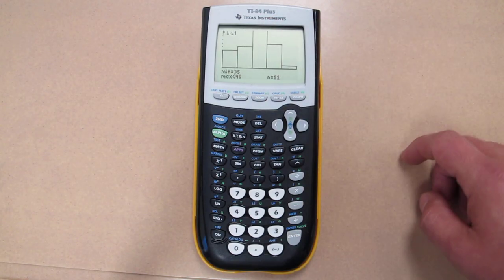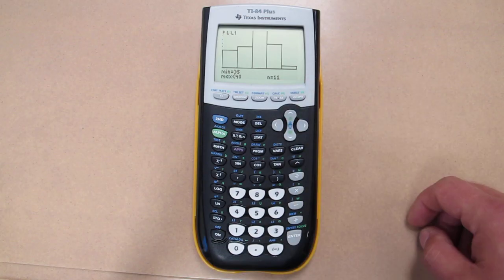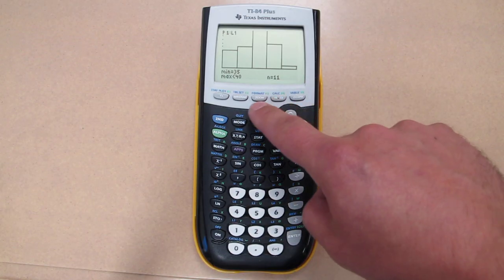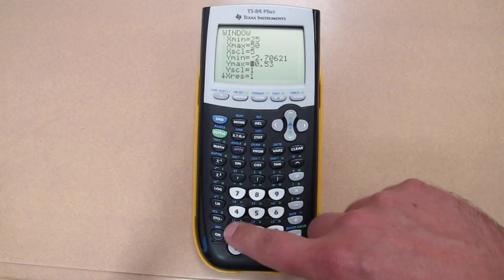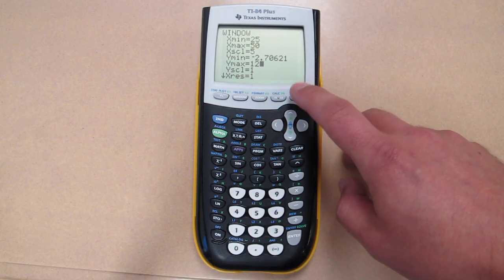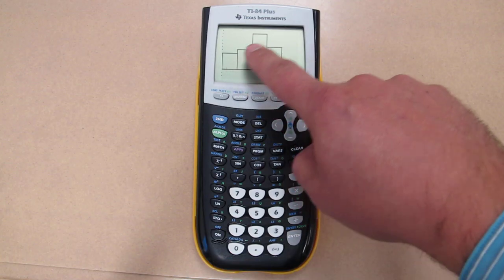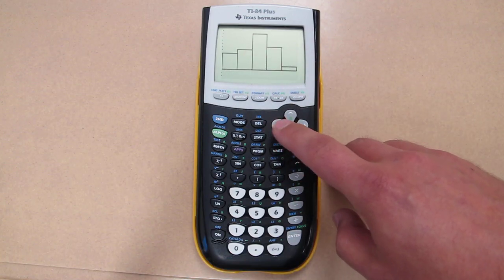However, this one's cut off. We see its frequency is 11. To make sure that one fits, push window again and go to where it says Y maximum. Let's change that to 12, and when we push graph again, we now see everything fits with not awkward classes.